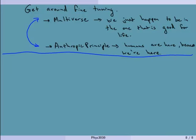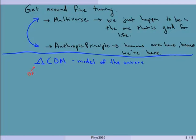We have something now called the Lambda CDM model of the universe. Lambda is dark energy — because Lambda is the symbol that Einstein used for the cosmological constant — and CDM is cold dark matter. Right now the universe's expansion is accelerating, but we don't know what will happen in the future.